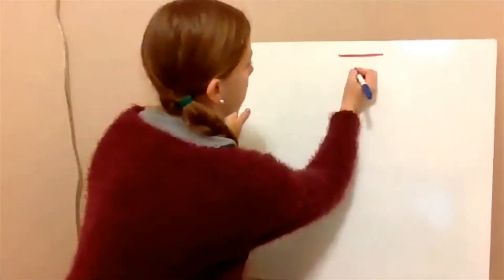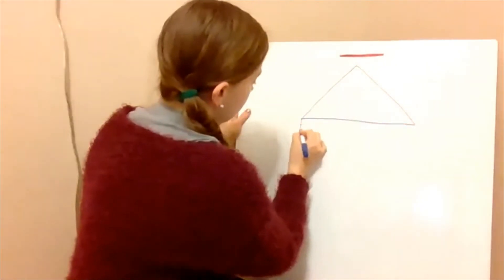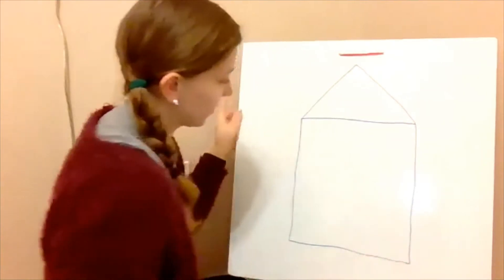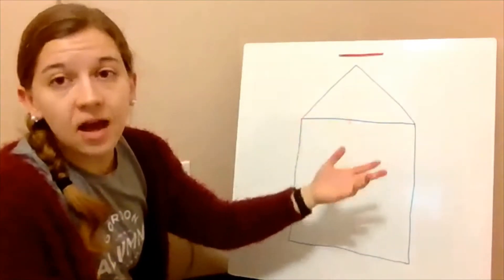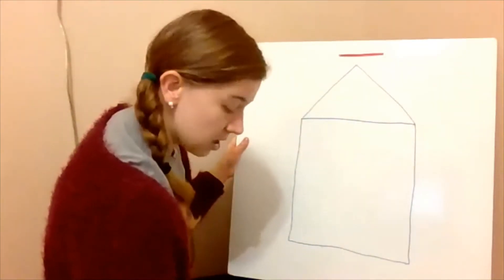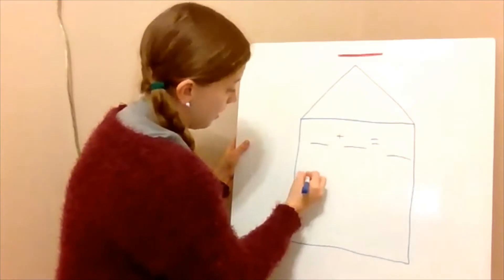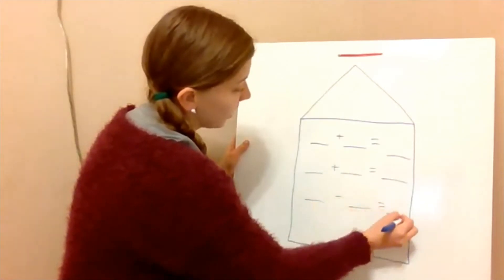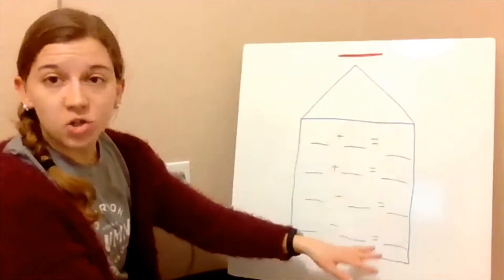For this house, we're going to start on top with a nice triangle — that's the roof of the house. Then we're going to have a nice big square below. There are going to be four equations, or four number sentences, in this house: two addition equations and two subtraction equations.